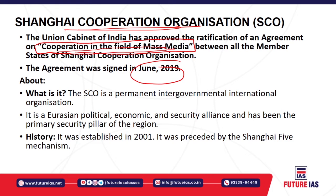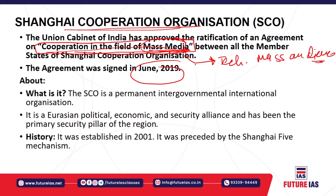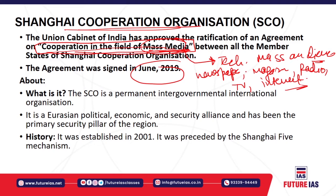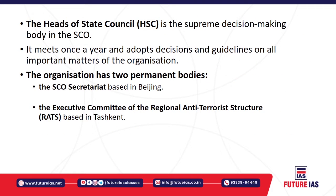The Shanghai Cooperation Organisation is a Eurasian political, economic, and security alliance established in 2001. Regarding mass media — the term refers to technology intended to reach a mass audience, through primary means of communication to reach the vast majority of the general public. Common platforms used for mass media include newspapers, magazines, radio, television, and the internet. This agreement is about cooperation in this domain.